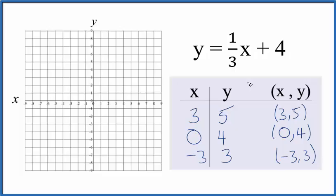Again, we could choose any values for x, but if we're strategic and we end up with whole numbers and it fits on the graph, that makes life a lot easier. Let's graph the points. 3, 5; 0, 4; and negative 3, 3. And there's our line.